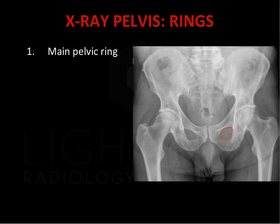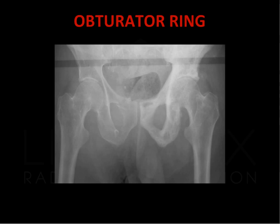The second ring to assess is the obturator ring, formed by the pubic, ischial, and iliac bones. This case demonstrates fractures of the right obturator ring. Often, the second fracture may be difficult to visualise if it is minimally displaced on a single AP projection.